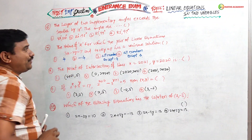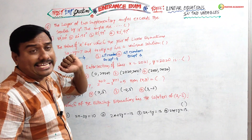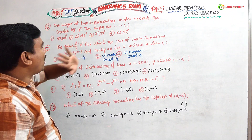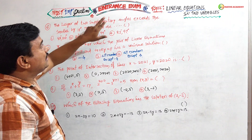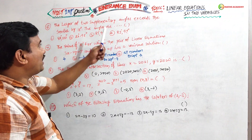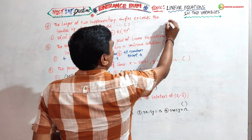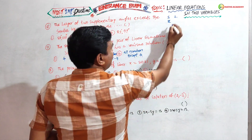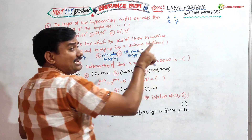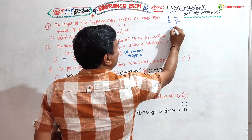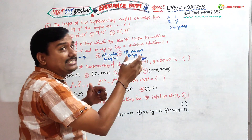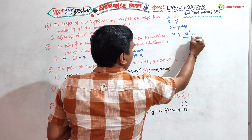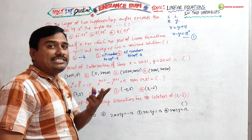Question number 6: The larger of two supplementary angles exceeds the smaller by 18 degrees — find the angles. Let the smaller angle = x and larger angle = y. Larger exceeds smaller by 18, so y = x + 18, which gives x − y = −18, or x − y + 18 = 0 — equation 1. Also, supplementary angles sum to 180°, so x + y = 180° — equation 2.